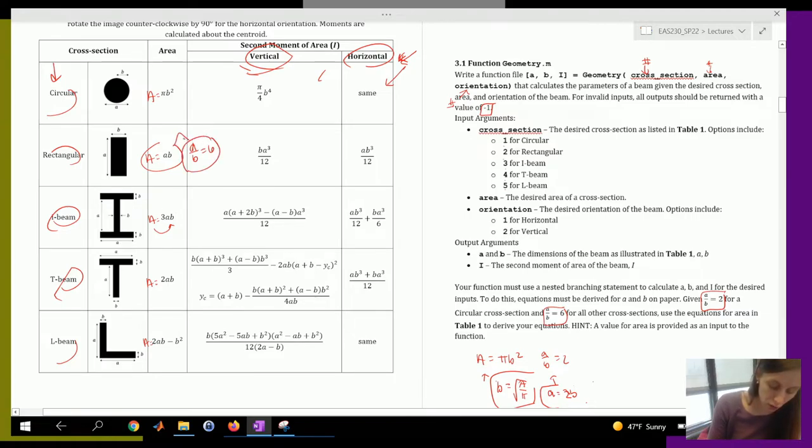Given these two equations, you can go ahead and calculate what A is, what your calculation for B is going to be, and what your calculation for A is going to be. Remember, this is given. This is your input. So do that for all of the other ones.